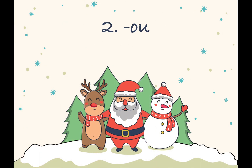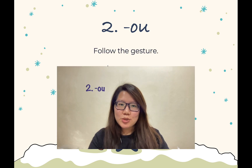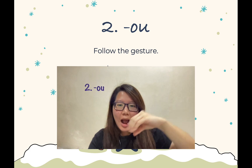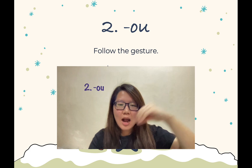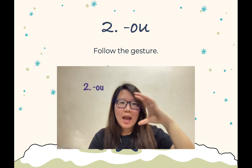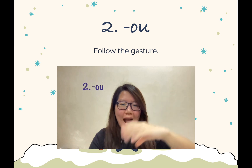Number two is A. Follow the gesture. Number two: A, A, A, A. Again: A, A, A, A.